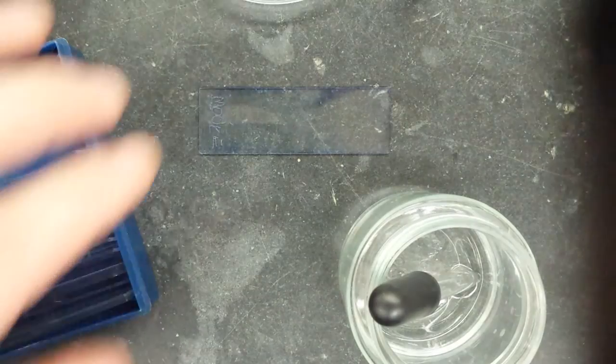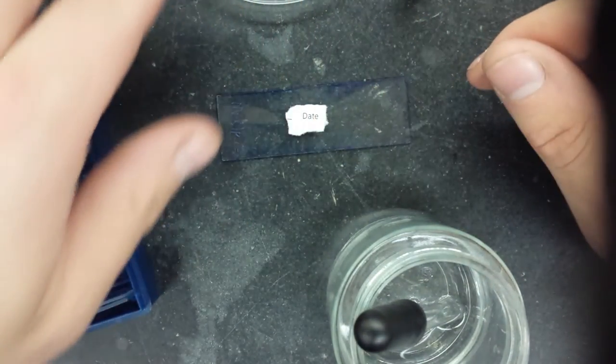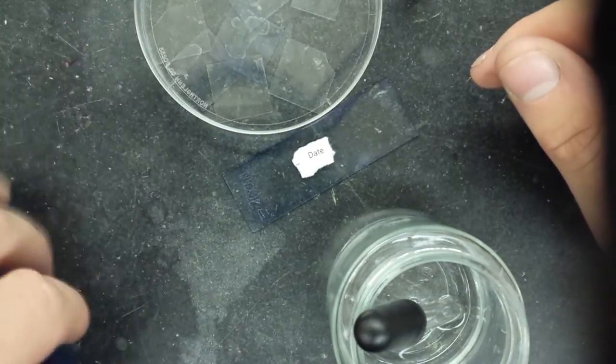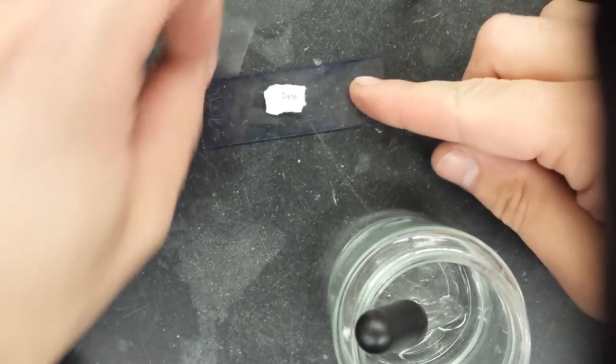It's really hard to pick up and you just position it on the slide as such, usually in the middle is best. Then you need a cover slip which are in here, so here's my cover slip.